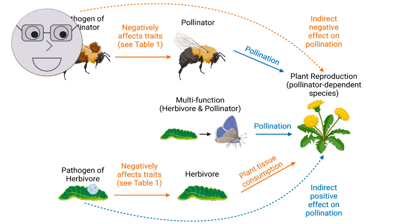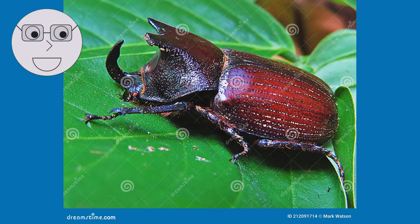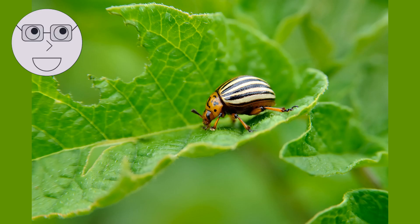Insects also have important relationships with plants. Some insects are pollinators, transferring pollen from one flower to another and allowing plants to reproduce. A bee pollinating a flower, a butterfly landing on a flower. Other insects are herbivores, feeding on plant material and sometimes causing damage to crops. A caterpillar eating a leaf, a swarm of locusts devouring a field.